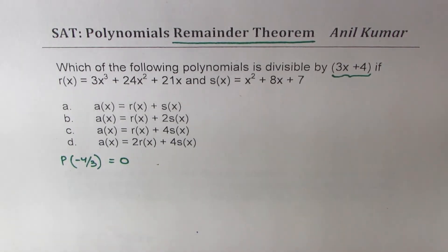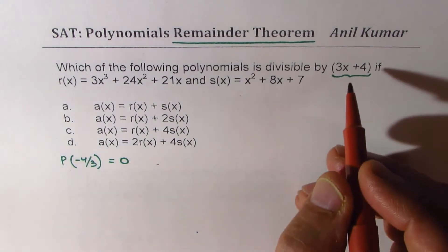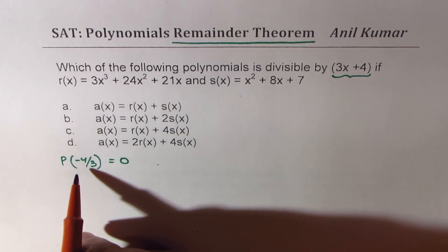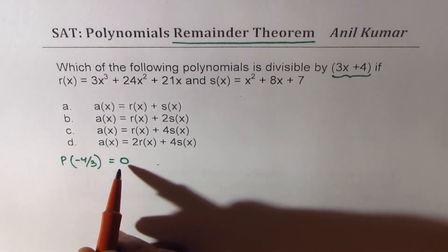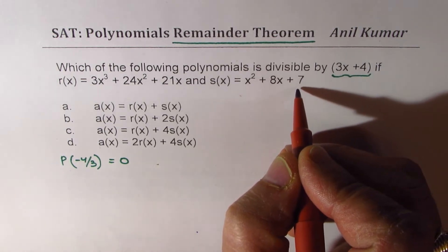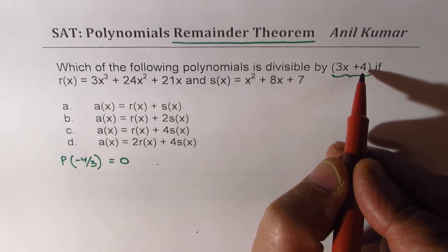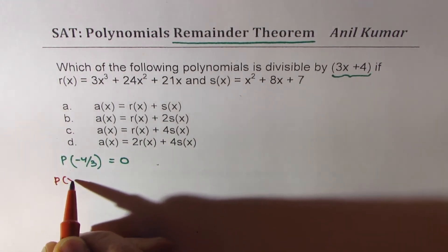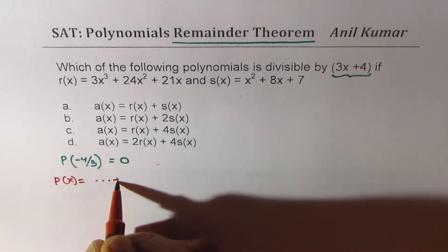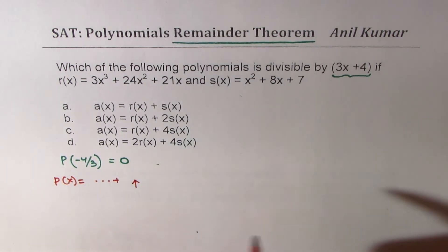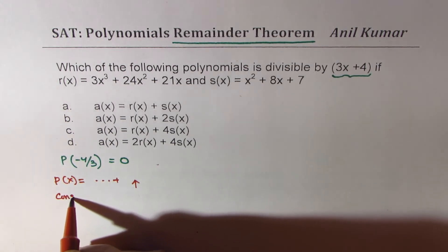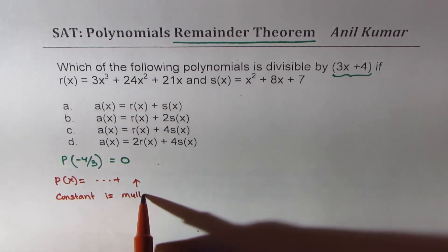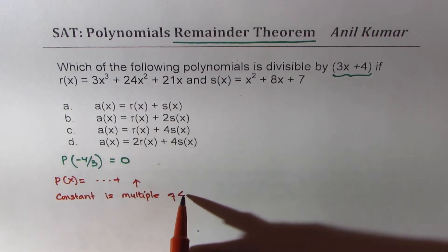Now if you remember, there are a few rules which follow, and that is to say that the polynomial value of minus 4 over 3 will be 0 if and only if the constant term is a multiple of 4. So when we have 3x plus 4, then in that polynomial function the constant term is multiple of 4. This is important.